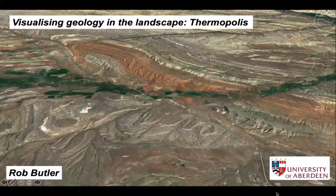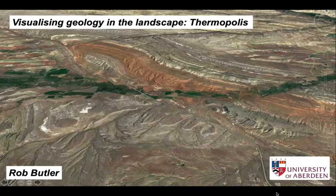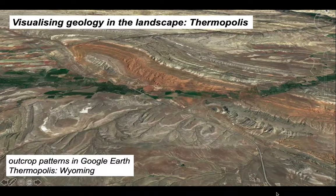The patterns of geological formations seen on maps or satellite images reflect not only the 3D geological structure extending into the subsurface, but also how these formations are revealed through erosion — in other words, the topography of the landscape in which they are exposed. We can explore these dual controls to interpret the geology here near the city of Thermopolis in Wyoming, on the southern flank of the Bighorn Basin.